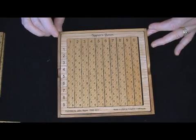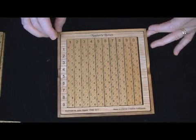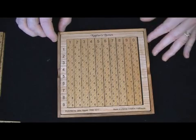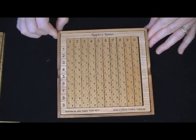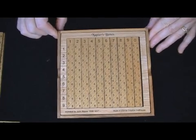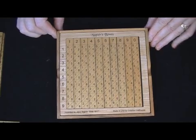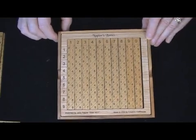They really are quite amazing. They were designed in 1617 by John Napier. He was a Scottish mathematician and probably England's first great mathematician. It's quite an ingenious device. It simplified complex multiplication, essentially.